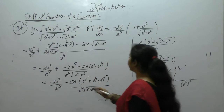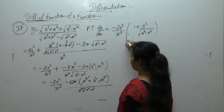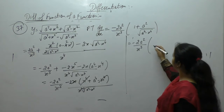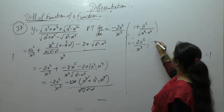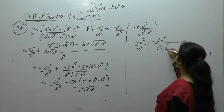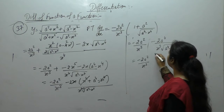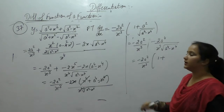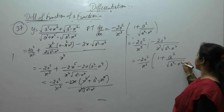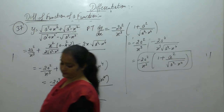Now x⁴ will get cancelled, so we are left with minus 2a² upon x³, minus 2a⁴ upon x³(a⁴ minus x⁴). Take minus 2a² upon x³ common. We have a² left, so a²(a⁴ minus x⁴). This is what we wanted to prove, so note it down.